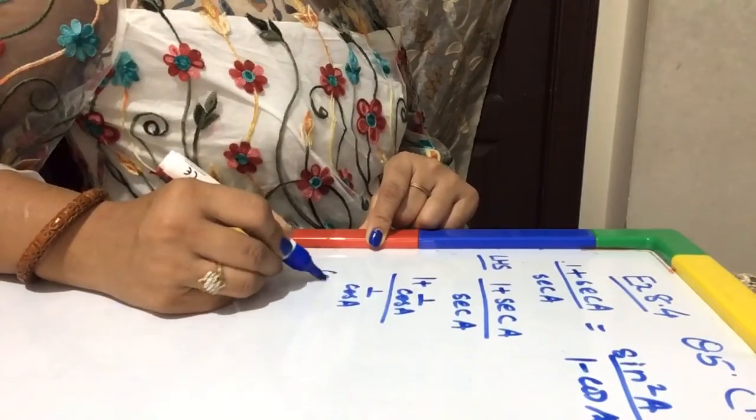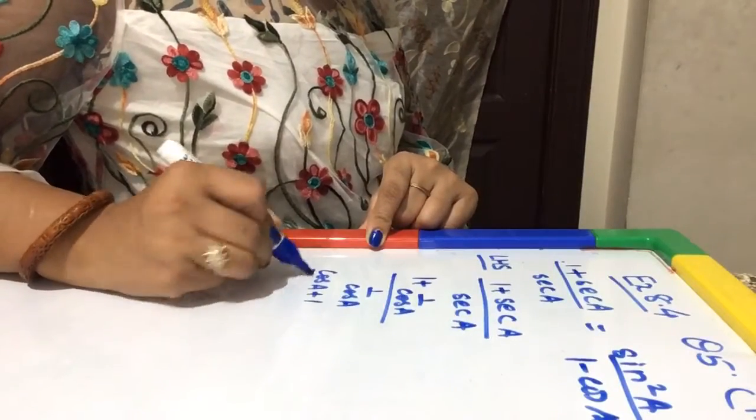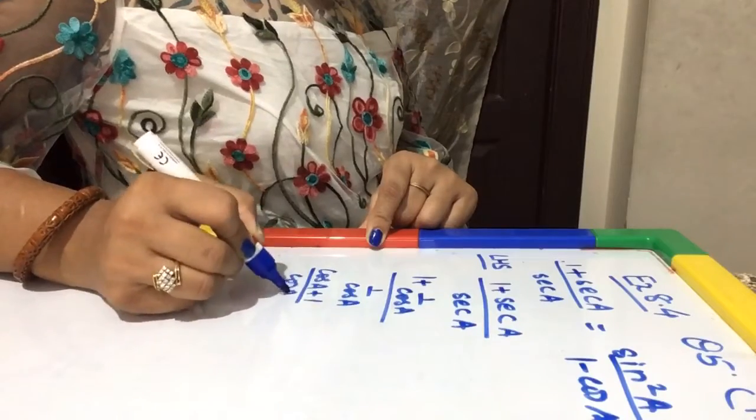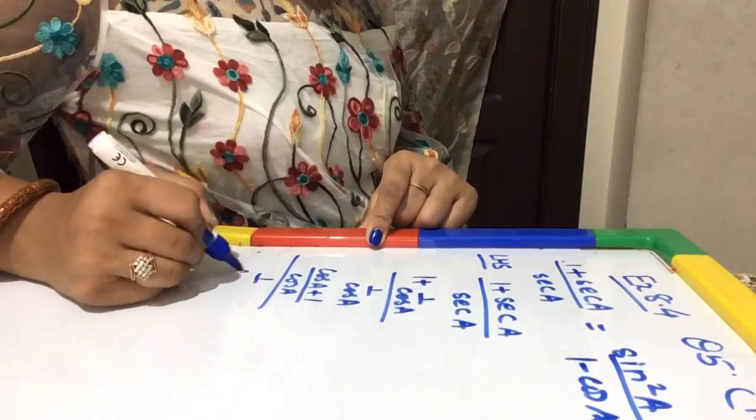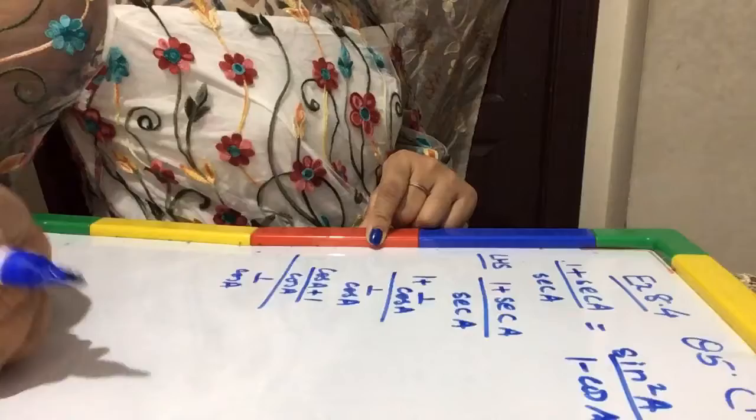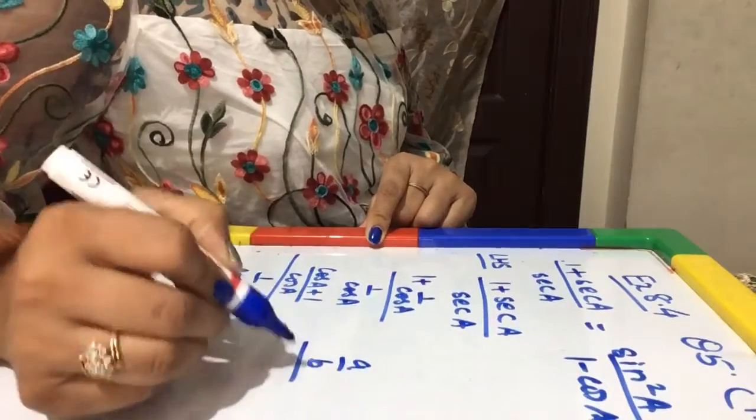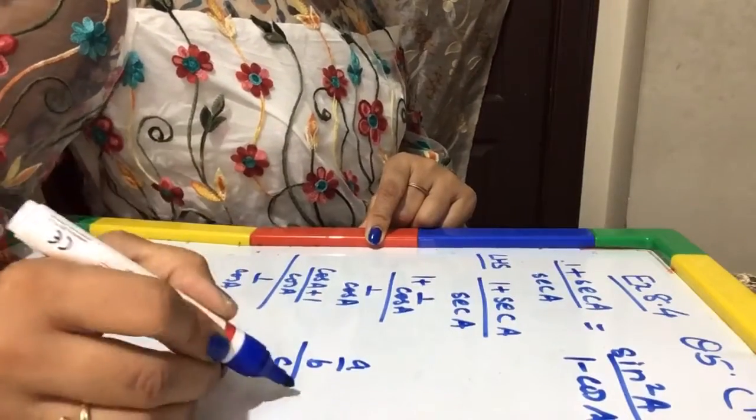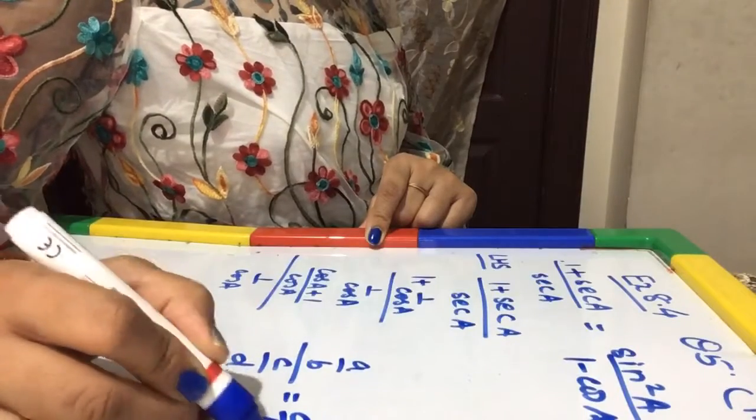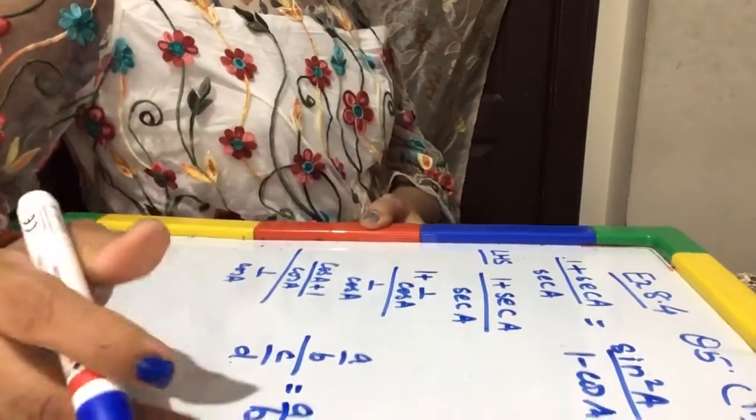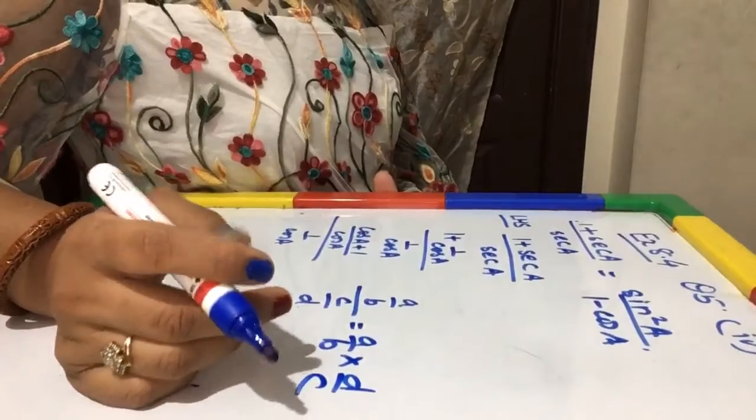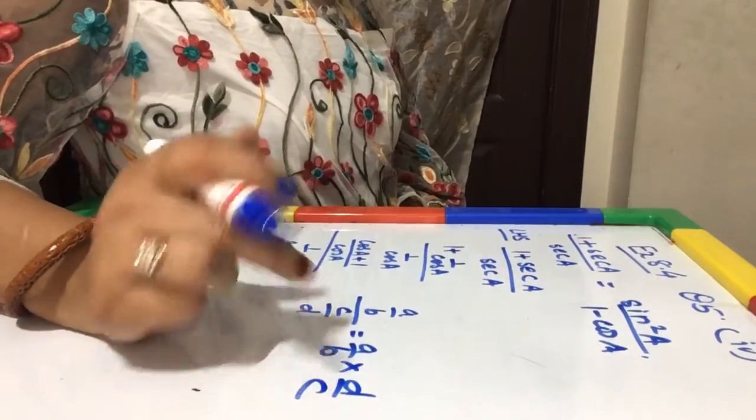Taking LCM, I will get (cos A + 1) / cos A / (1/cos A). And as we know that in rational numbers, (A/B) / (C/D) means (A/B) × (D/C), because the meaning of division is multiplication with reciprocal.